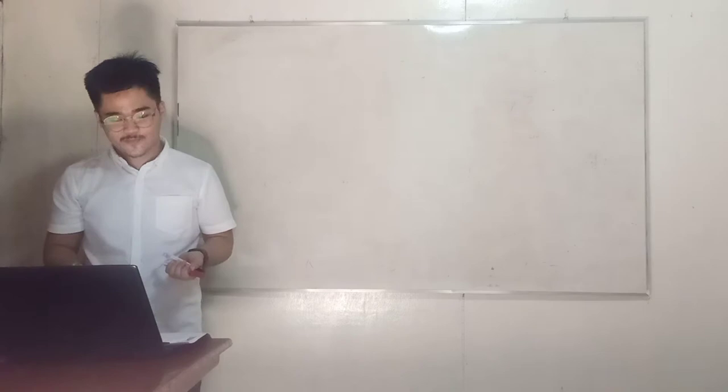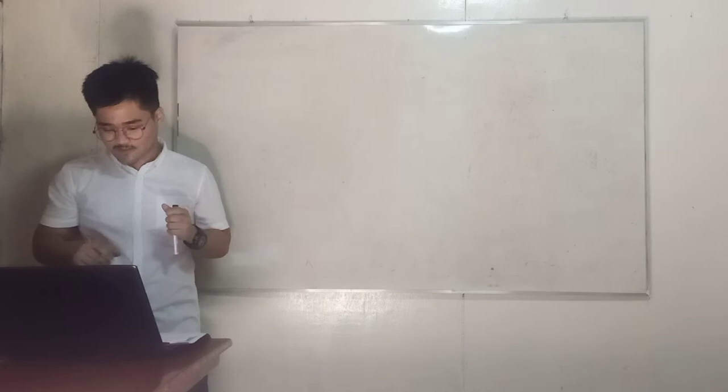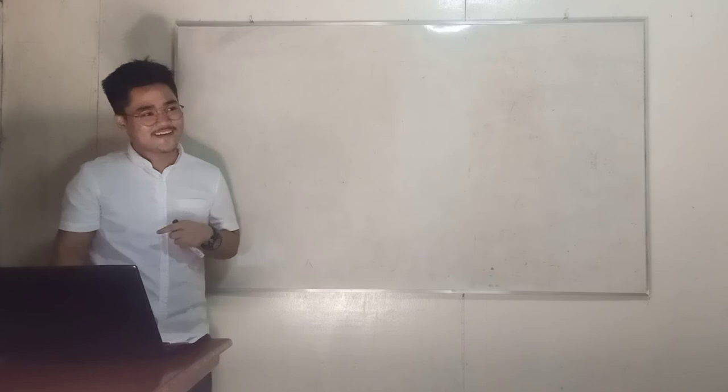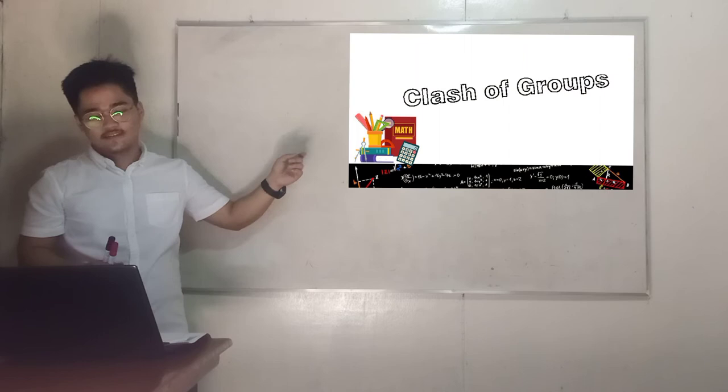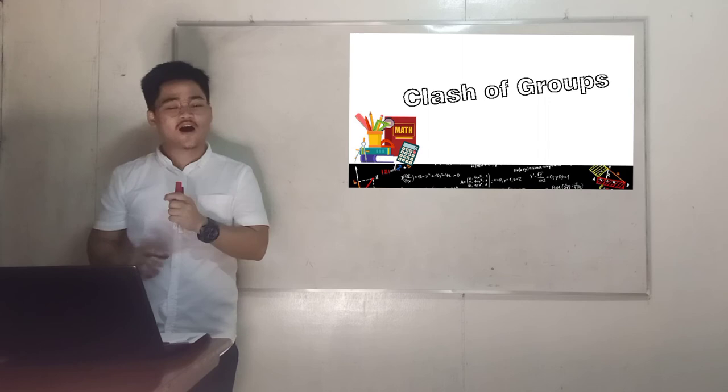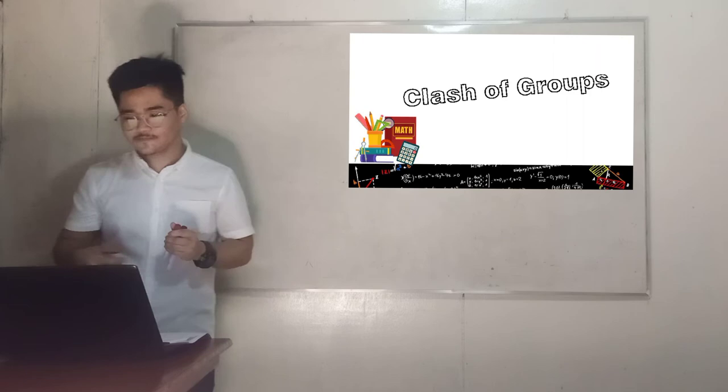Now for your next activity, the class will be divided into five groups: yellow, green, red, orange, and blue. There are different colors under your chairs which determines your groups. So at the count of five, please proceed with your group mates. One, two, three, four, and five. The activity is entitled Clash of Groups. Before I introduce the activity, I need one representative from each group to get the materials in front.